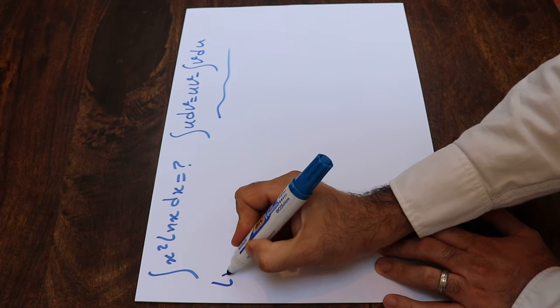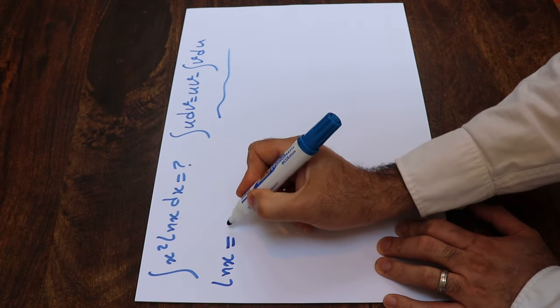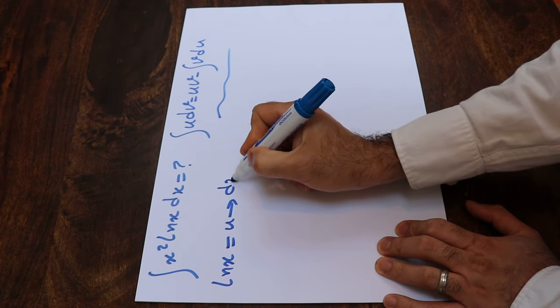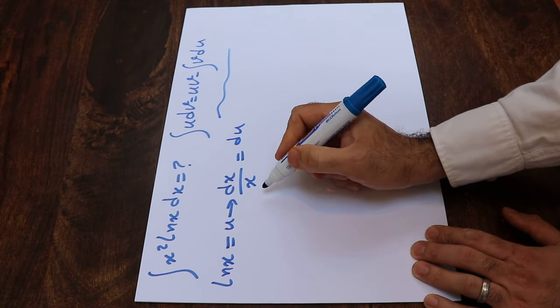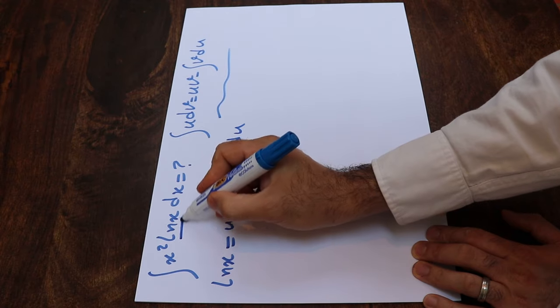Here I define ln(x) as u, therefore dx divided by x will be equal to du. So this is u for me.